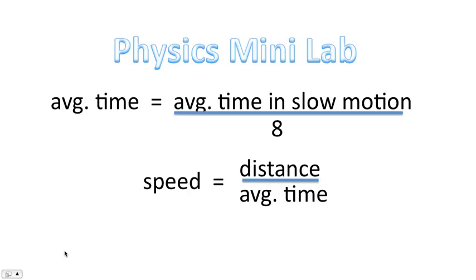Here are some of the equations that will help you with this table. Please show all your work underneath the table. Please note that to convert the average time from the slow motion time, you have to divide by eight. Because time increases by a factor of eight when recording something in slow motion.